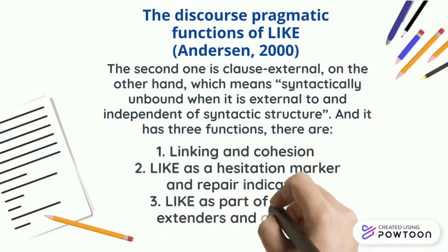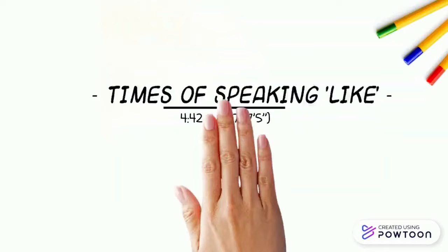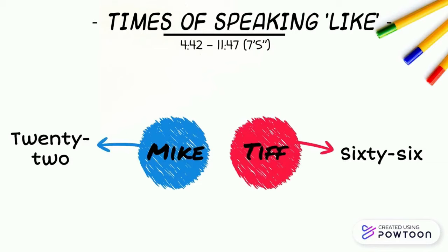I have chosen a clip that starts from 4:42 and ends at 11:47, six minutes long. According to my count, Mike, the male, uses 'like' 22 times, and Tiff, the female, uses it 66 times. The reason for such a big difference is because Tiff is talking much more than Mike in these seven minutes.